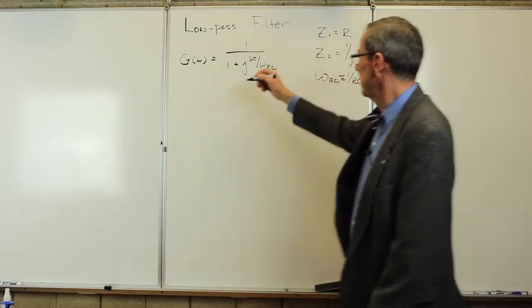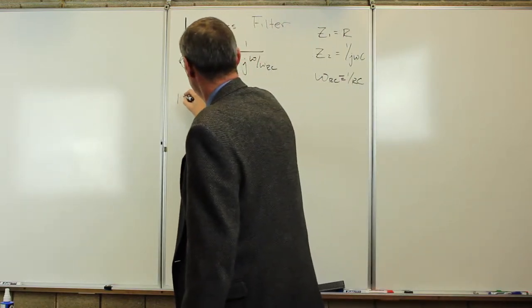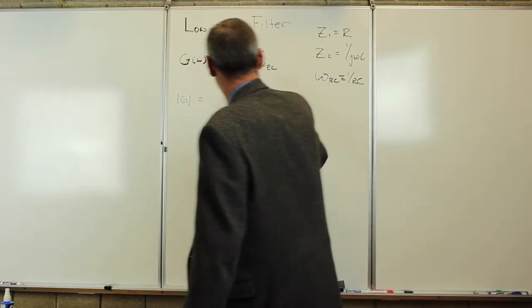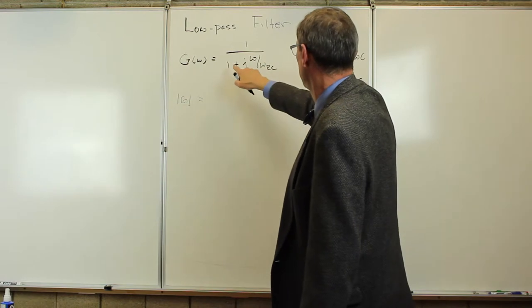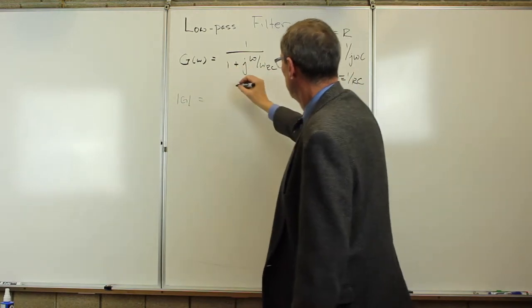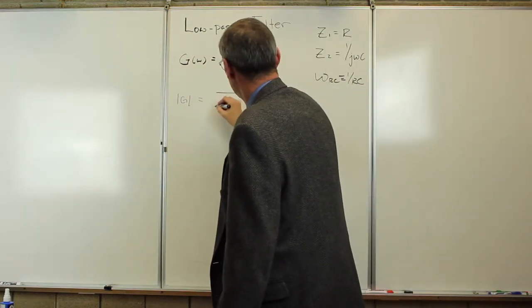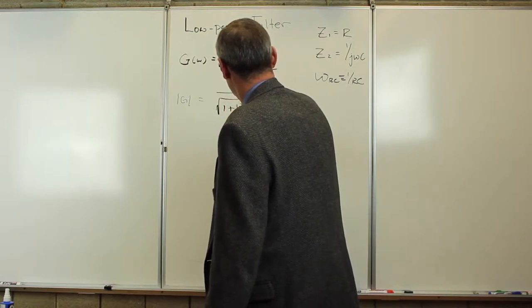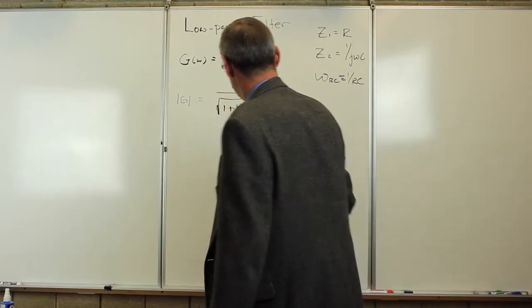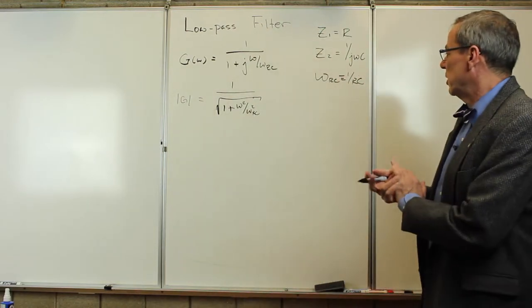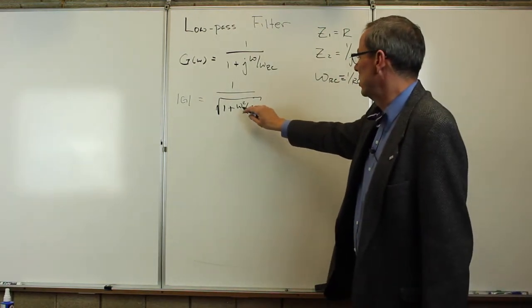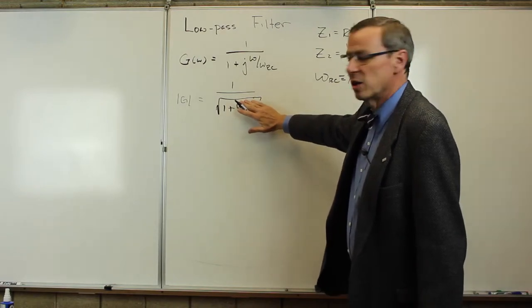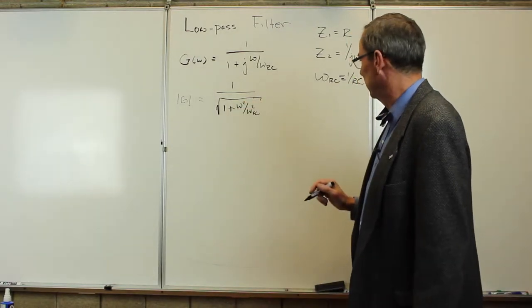We start with the magnitude. The magnitude of the gain is going to be 1 over square root of 1 plus omega squared over omega RC squared. We can look at some limits. If omega is very small, that goes to 0, we get the 1 just like we expected.